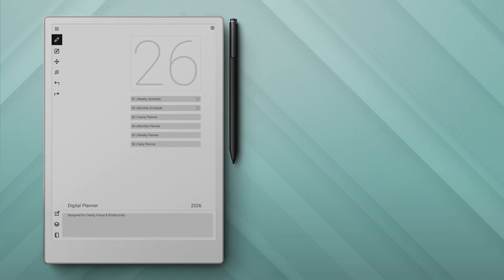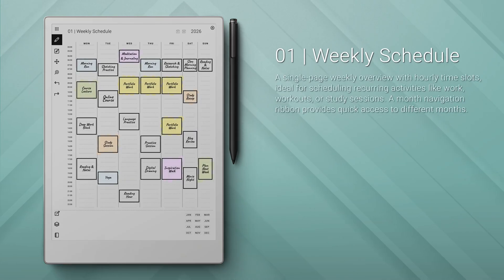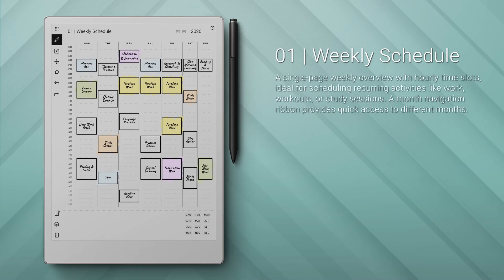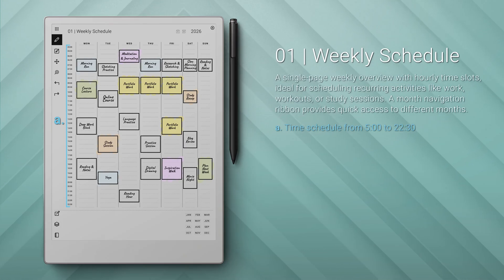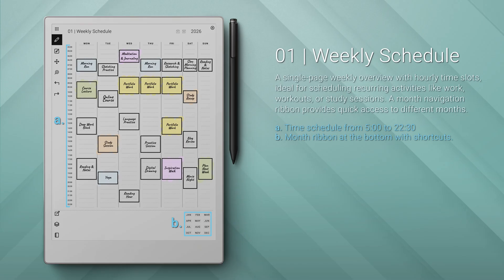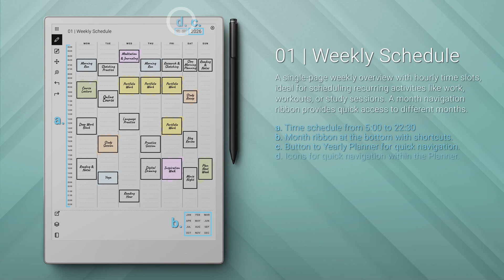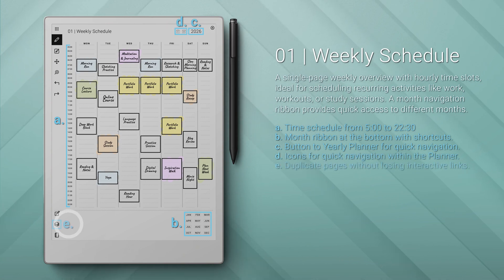Number one: the weekly schedule. This is a single-page weekly overview with hourly slots for work, workouts, or study. It includes a month ribbon for quick navigation, a time schedule from 5 a.m. to 10:30 p.m., a month ribbon at the bottom with shortcuts, and a button to the yearly planner for quick navigation. Icons are available for quick navigation within the planner, and you can duplicate pages without losing interactive links.